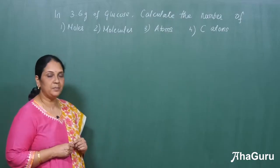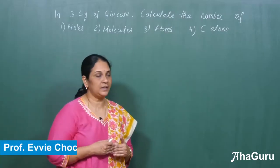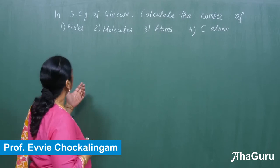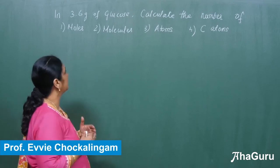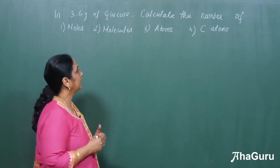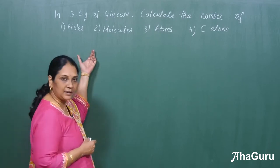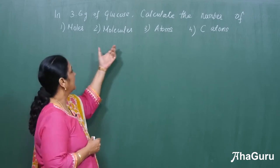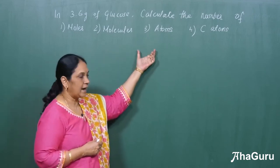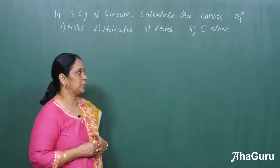Now let us see a problem based on the mole concept. The problem is: in 3.6 grams of glucose, calculate the number of moles, then the number of molecules, then atoms, and the number of carbon atoms.